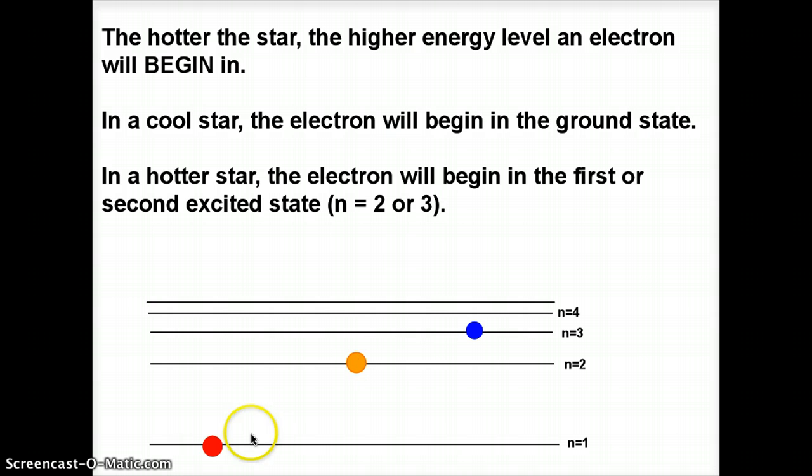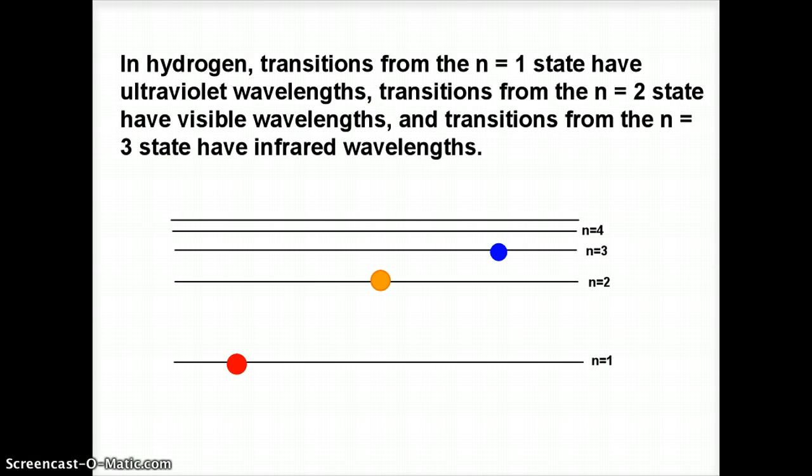So if you think about this in a very cool star, we're not going to get transitions from 2 to 3 because the electron starts in N equals 1. And in a very hot star, we're not going to get transitions from 2 to 3 because the electron is already in N equals 3. It can't transition to 3 from there. So in a cool star or a hot star, we're not going to see a transition from 2 to 3, which is what we're looking for with H-alpha.